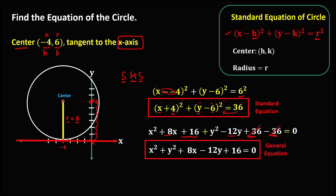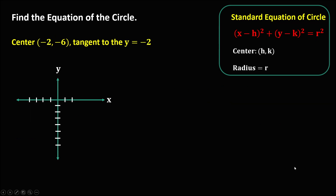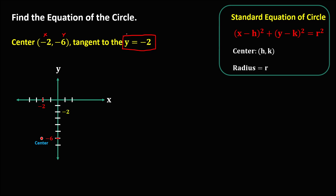This is the general equation for this circle. For the next given, x is negative 2 and y is negative 6. This is the point of the center. Since tangent to y equals negative 2, and this is y equals negative 2, we have the tangent line.